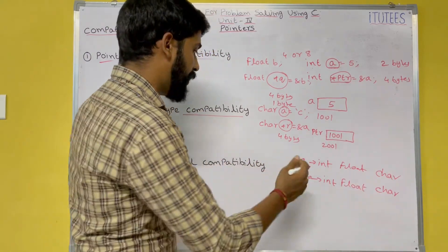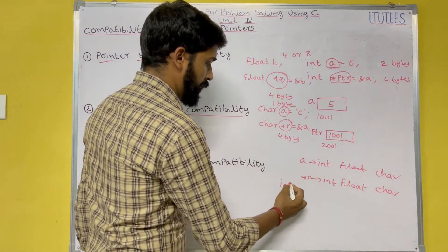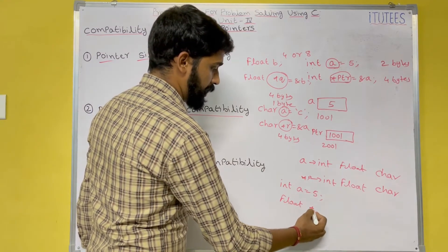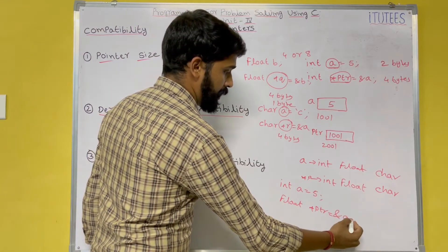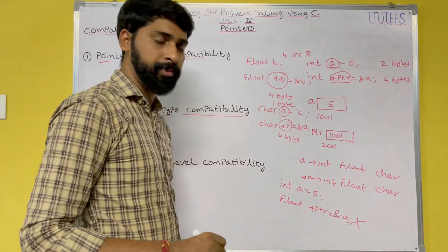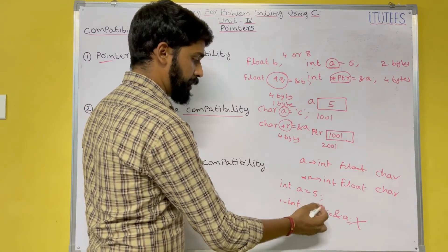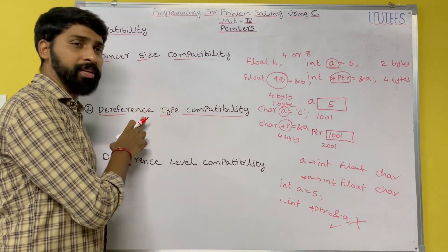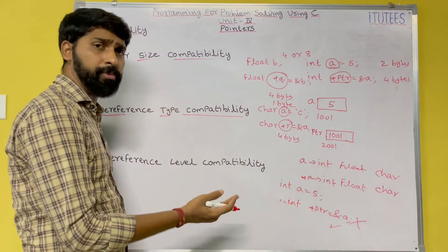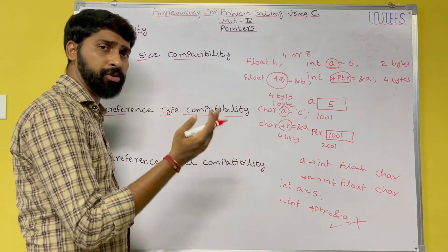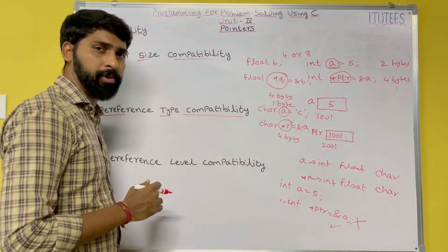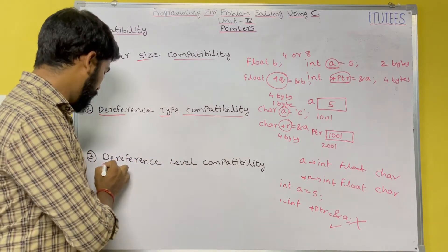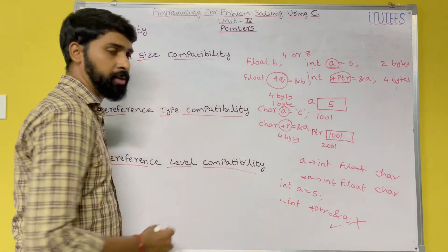If I try to write: int a equals to five and float pointer ptr equals to ampersand a — that is illegal. If it is int pointer ptr, then it is correct. That is called dereference type compatibility: if the variable is integer and you want to store the address of that variable in a pointer, then the pointer variable must also be integer.